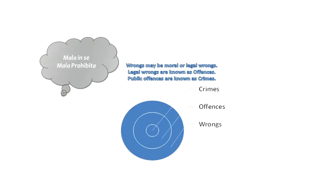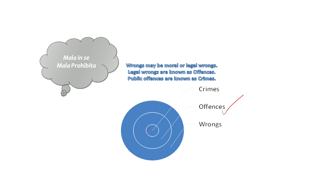From this figure, you can understand clearly what amounts to a wrong, an offense, and a crime. The outermost circle talks about wrongs — everything covered under all three circles amounts to a wrong. It is only wrongs of a higher category that amount to offenses. Wrongs may be moral or legal; it is only legal wrongs that amount to offense. And among those offenses, it is only offenses of a grave character — which have the capacity of creating alarm and scare in society, which harm the public at large — that are termed as crimes, represented by the innermost circle.